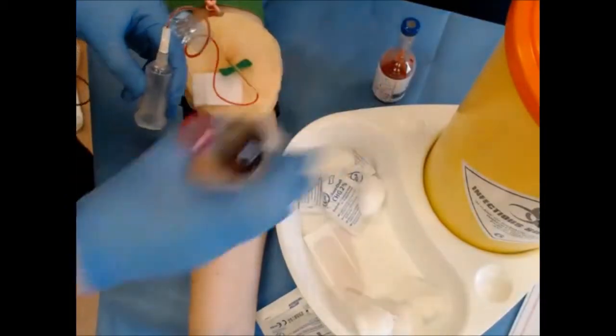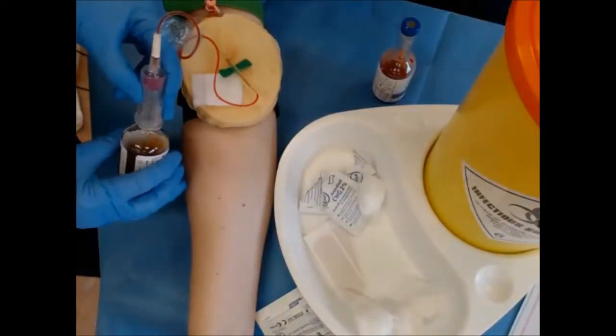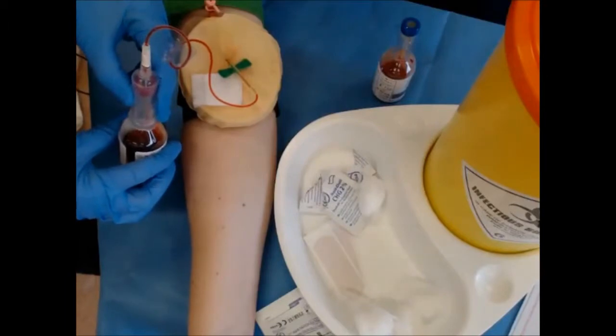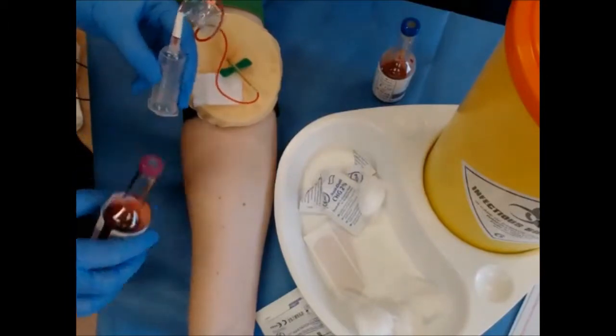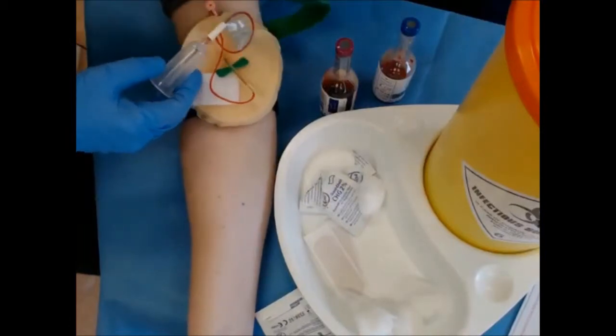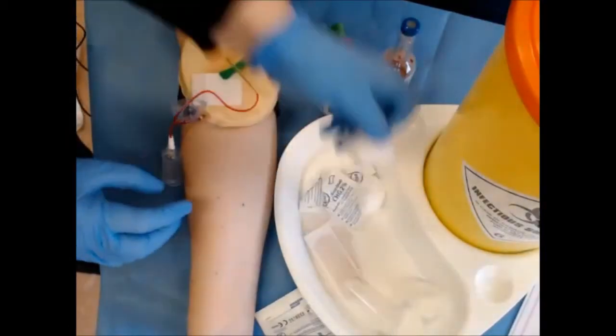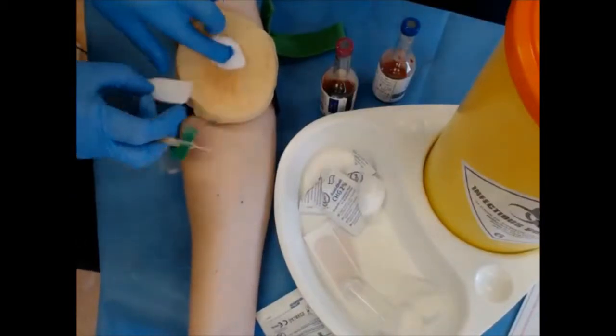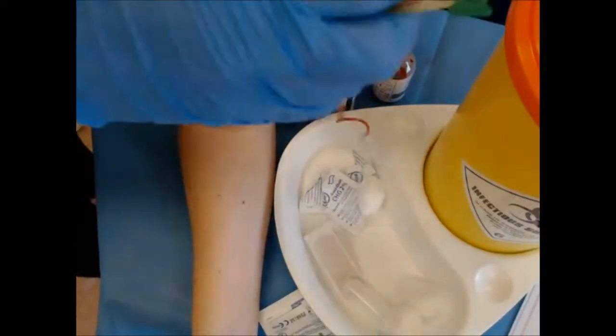Remove that. Then take your second sample, which is your anaerobic and again, fill for 8 to 10 mils. Once you have obtained your sample, release the tourniquet from the patient. Apply a cotton wool ball and ask the patient to push or to bend up their arm and dispose of the sharps.